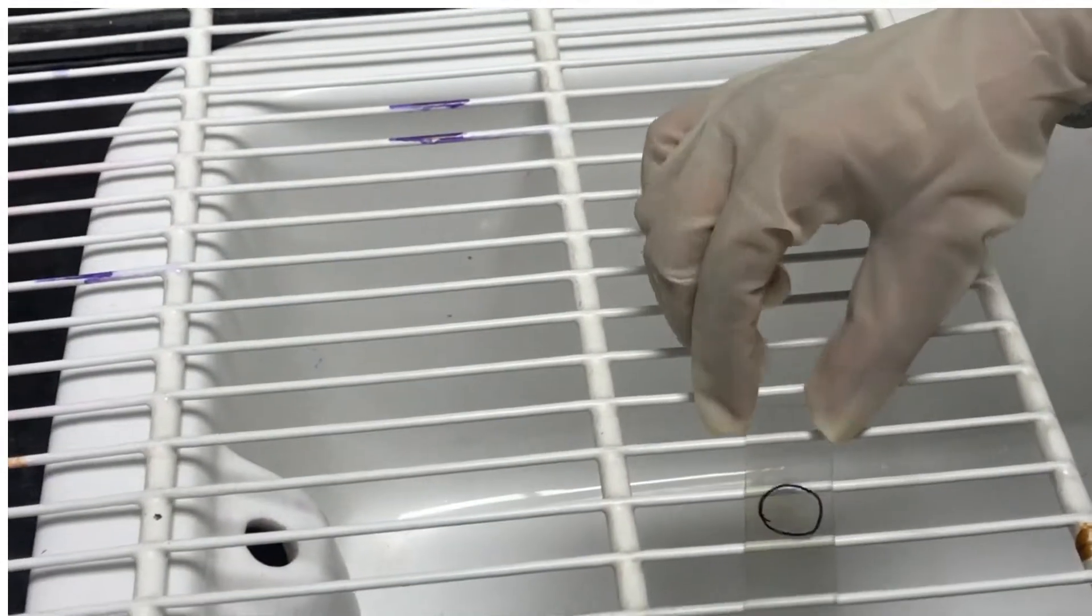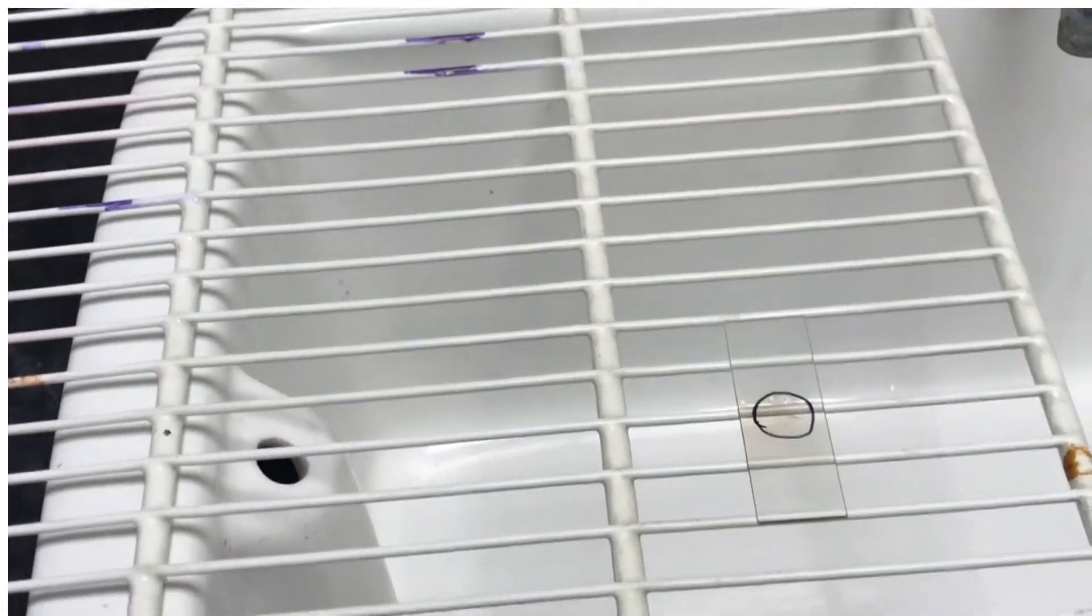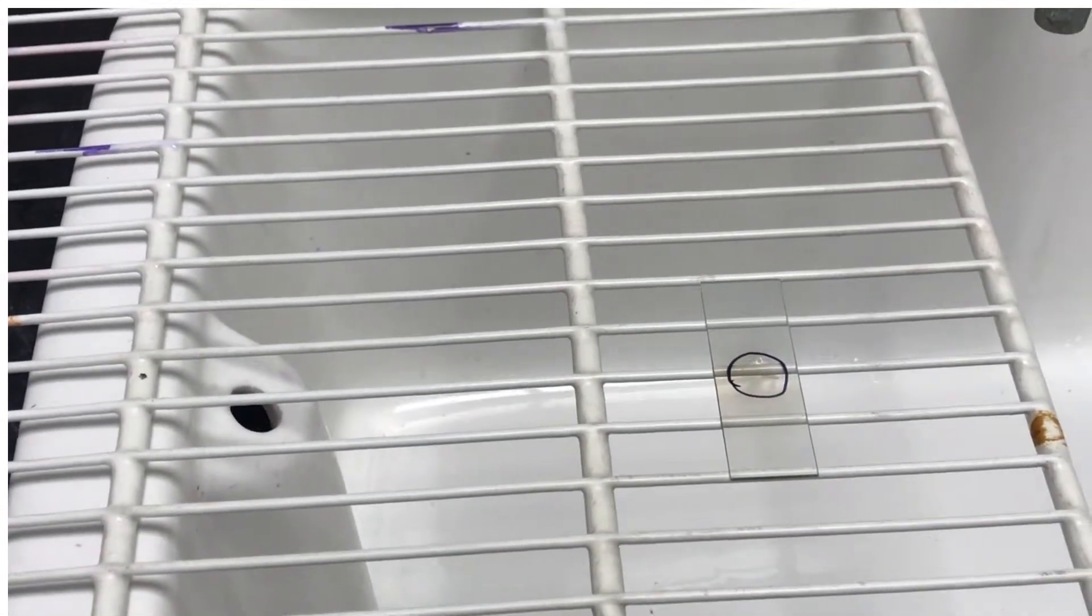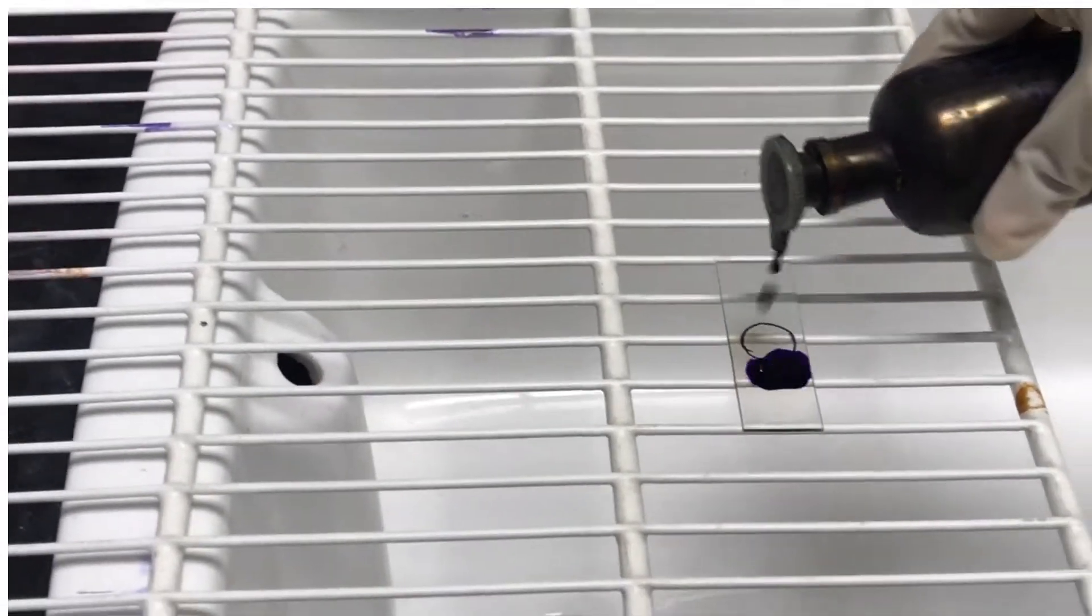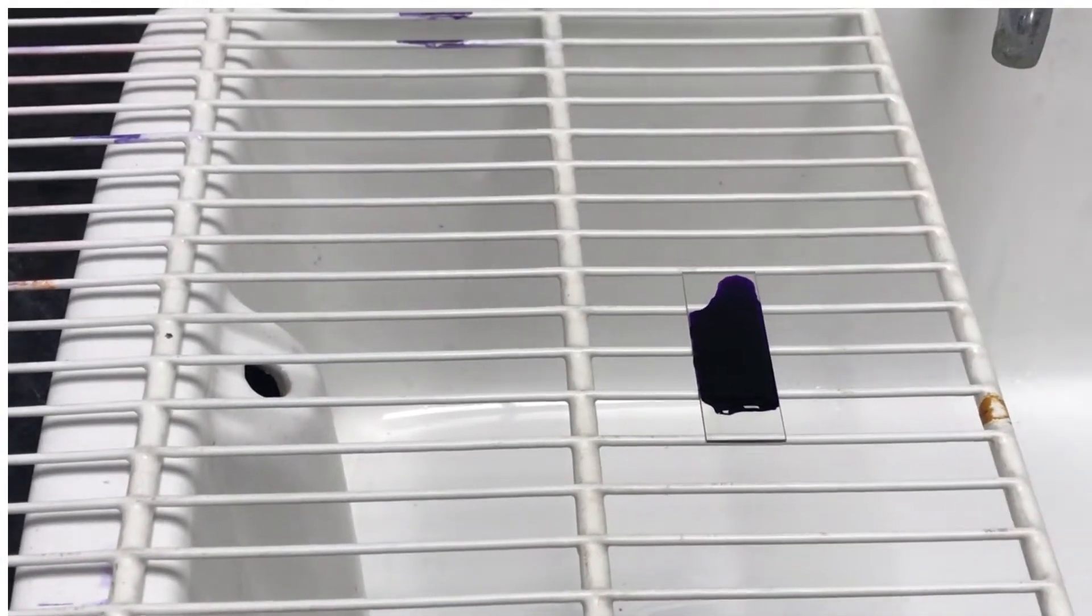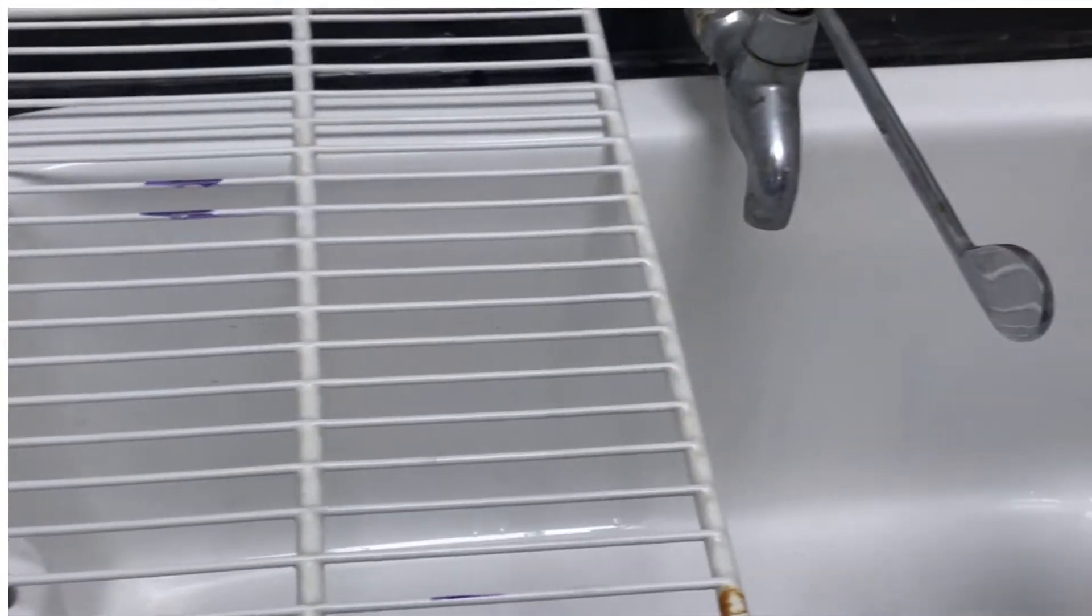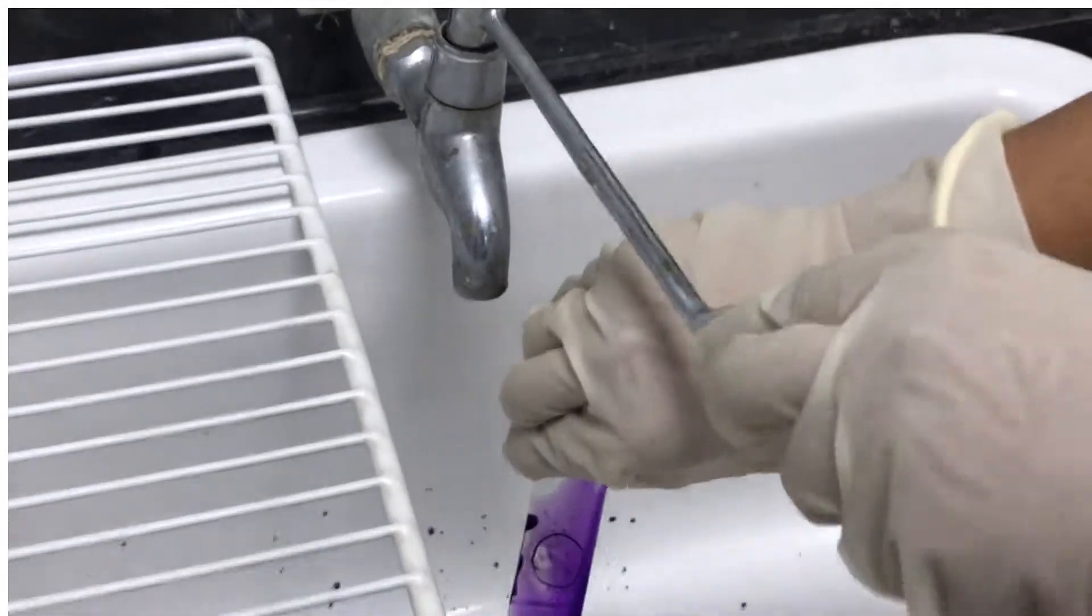Now the smear is ready to be stained. Place the slide with heat-fixed smear on the staining tray, flood the smear with crystal violet and let it stand for a minute. Tilt the slide and rinse with tap water.